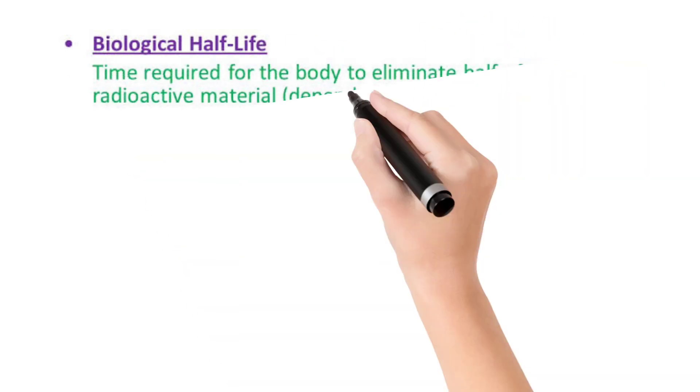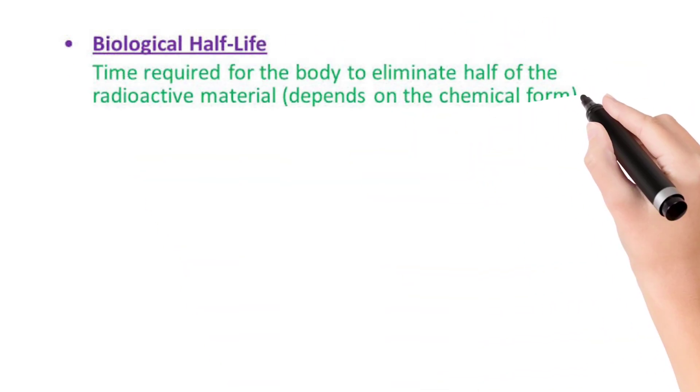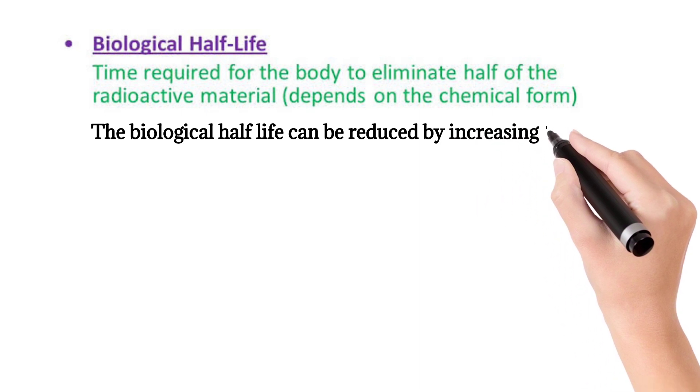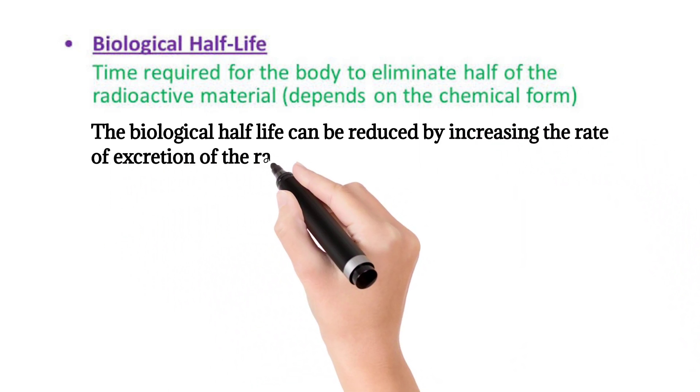Biological half-life is the time required for the body to eliminate half-concentration of the radioactive material. It depends on the chemical composition of radioactive material. The biological half-life can be reduced by increasing the rate of excretion of the radionuclide from the body.